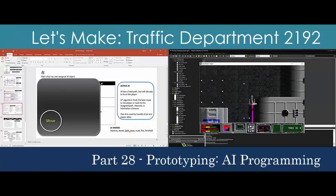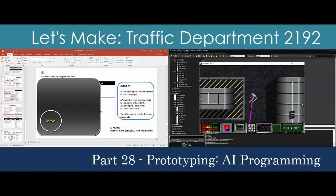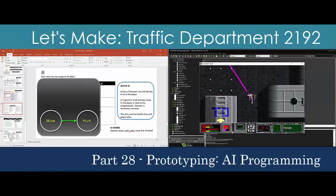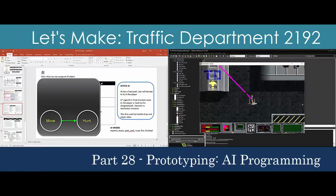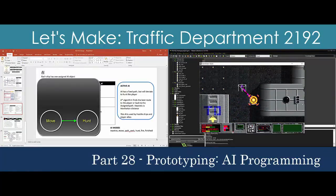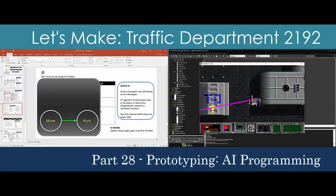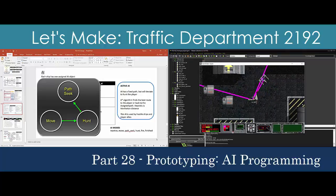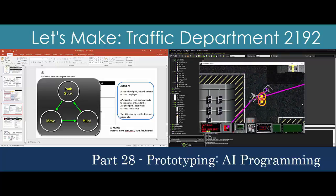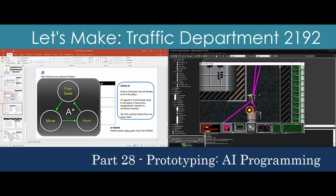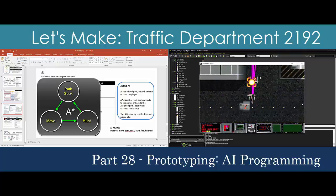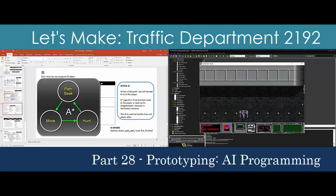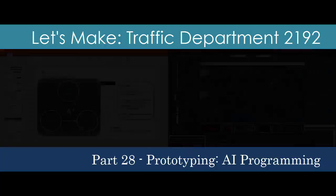We have enemy ships moving around the game world, but now we'll make them react to the player and fight back. The A-Star algorithm lets opponents deviate from their path, hunt the player, and return to their mission if they disengage. Now that we can see damage effects in the HUD, we'll tweak the game balance to something the player can win.